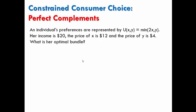The problem tells us that income is $20, the price of x is $12, and the price of y is $4, and we need to determine the optimal bundle.